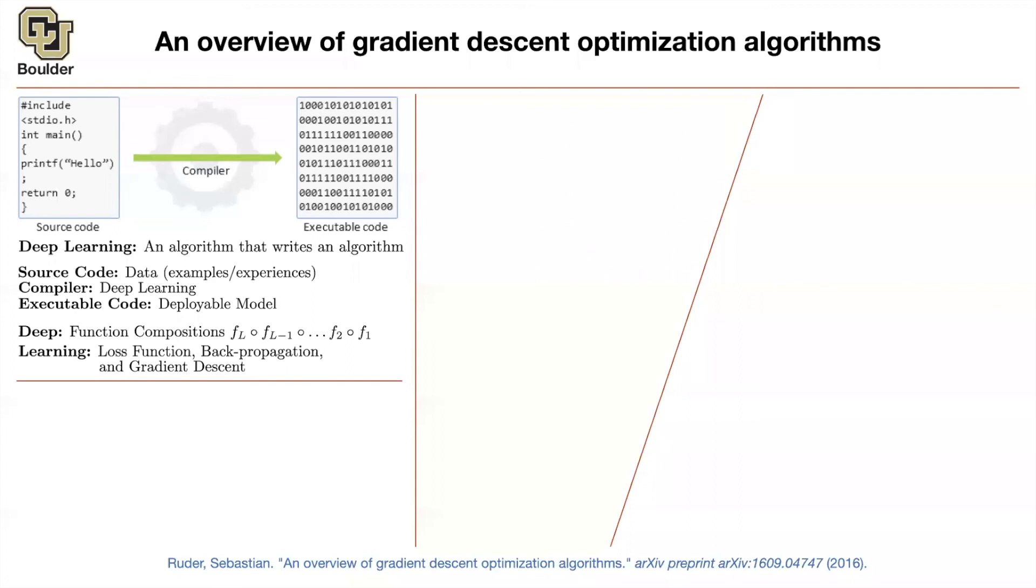And usually, as I said, the source code for deep learning is your data. If your algorithm is doing something not correct, you have to go back to your data and see what's wrong in your data. Maybe there are some outliers in your data. Maybe you have to clean your data. Maybe you have to add some new observations to your data set and then retrain your model.